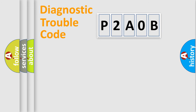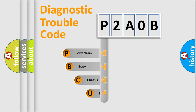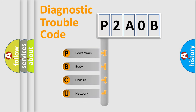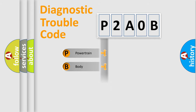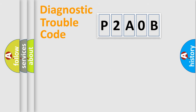First, let's look at the history of diagnostic fault code composition according to the OBD2 protocol, which is unified for all automakers since 2000. We divide the electric system of an automobile into four basic units: Powertrain, Body, Chassis, and Network. This distribution is defined in the first character of the code.